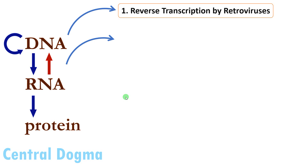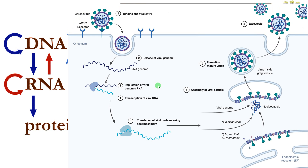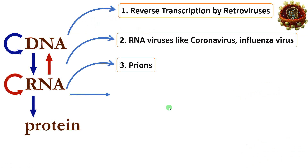The second exception is RNA viruses, like coronaviruses, influenza virus, etc. These viruses don't have reverse transcriptase. They have an RNA genome, and this genome codes for an RNA-dependent RNA polymerase — an enzyme used to replicate the RNA genome of the virus without the involvement of DNA or reverse transcriptase. Here, RNA is replicating with the help of an RNA-dependent RNA polymerase enzyme.